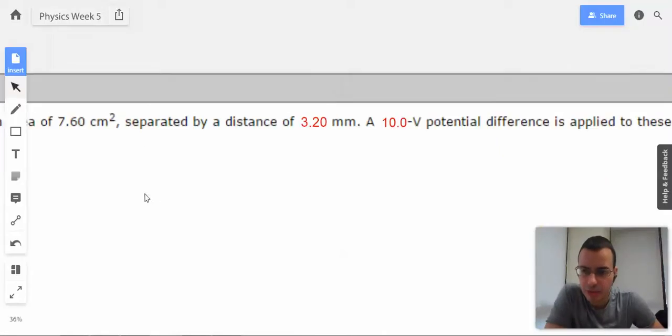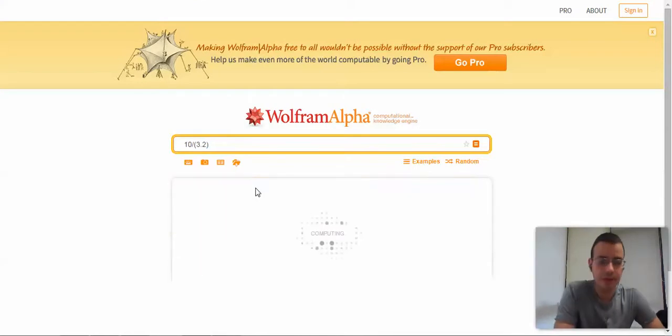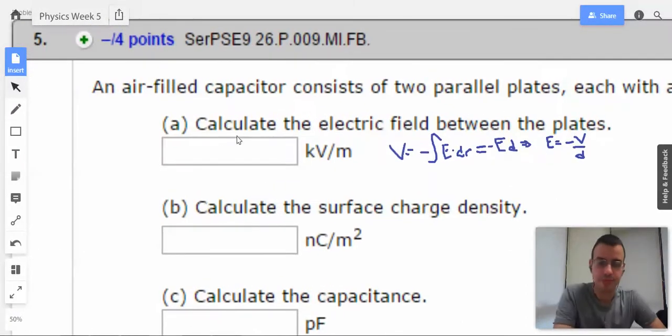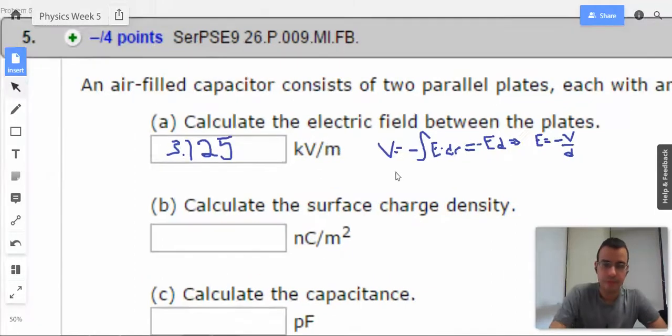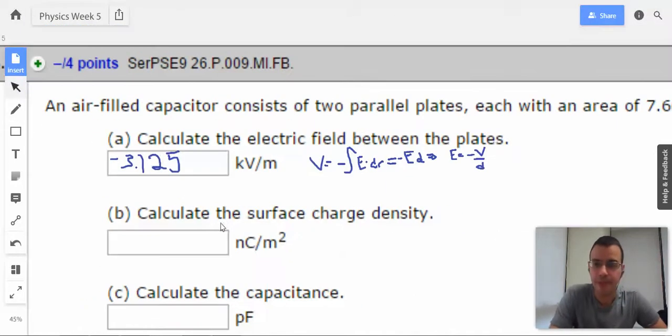Wait, did they ask for kilo? Aha! I'm just going to get rid of this 10 to the third, because it'll just automatically make it kilo on the top. You can follow it through. 3.125. This will be negative 3.125, and I'm going to throw the negative in there. They may or may not want it.